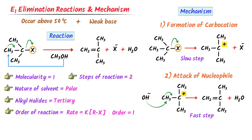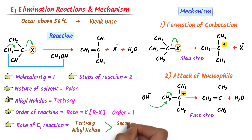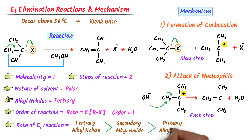The rate of E1 reaction only increases if we increase the concentration of the alkyl halide. The concentration of the polar solvent or weak base does not increase or decrease the rate. E1 elimination reactions are fastest with 3-degree carbocations, then 2-degree carbocations, and very difficult with 1-degree carbocations — because 3-degree carbocations are most stable and 1-degree carbocations are least stable.